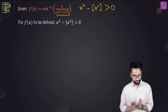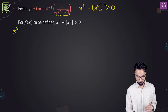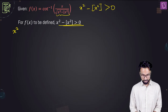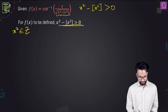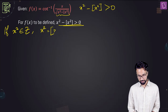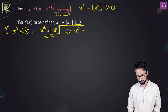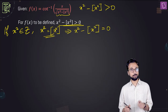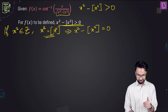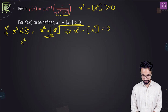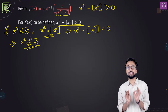So x squared minus GIF of x squared must be greater than 0 for f(x) to be defined. Now, x squared can either be an integer or it might not be an integer. If x squared is an integer, then x squared and its greatest integer function value will both be the same, meaning x squared minus GIF of x squared equals 0. Since we need it to be greater than 0, x squared cannot be an integer.